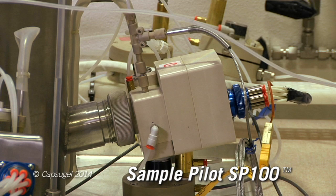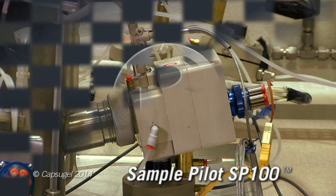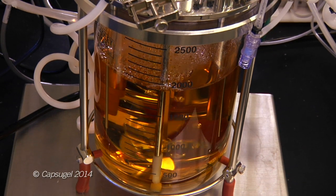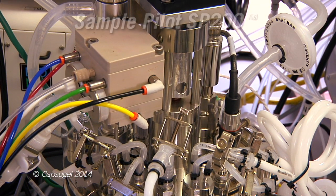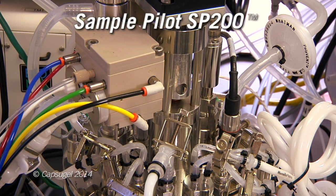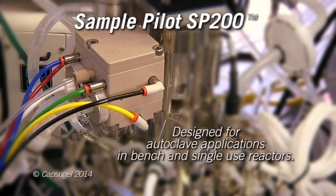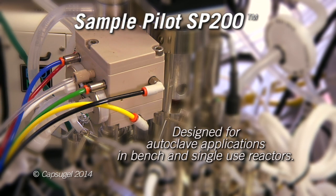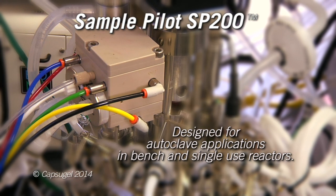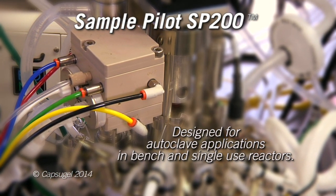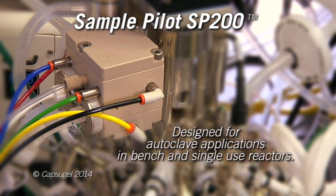It can be sanitized using custom parameters. The sample pilot SP200 was designed based on the successful SP100 system. It was designed for autoclave applications typically employed in bench scale and single-use bioreactors. It saves bioreactor volume by taking small volume increments as needed. After each sample, it is sanitized with a liquid sanitant such as 70% ethanol.